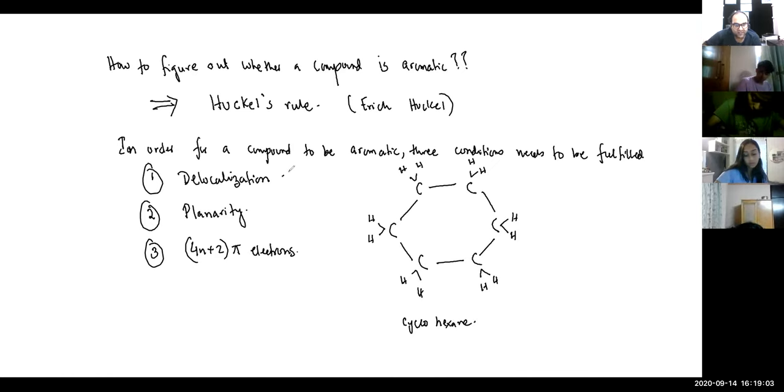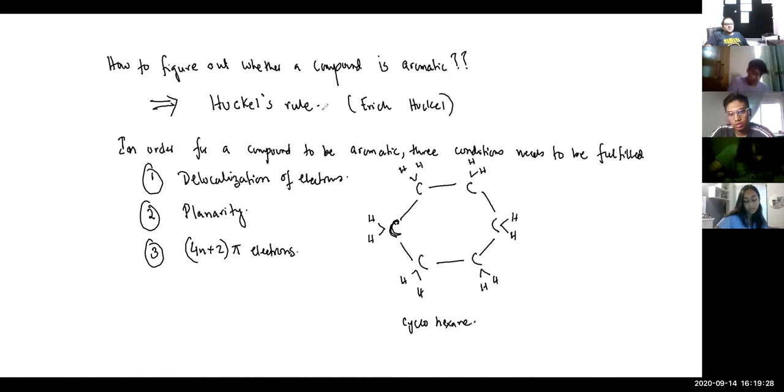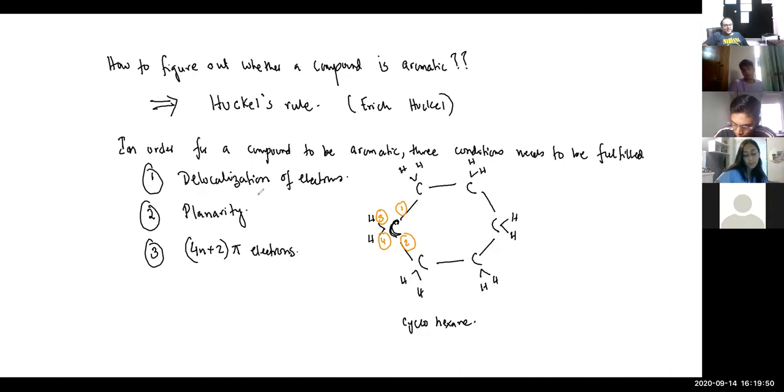Delocalization of electrons. So here each carbon is bonded to how many bonds? Four. One, two, three, four. Does it have any free electrons? No sir. Is there any delocalization of electrons? Is any electron free? No.